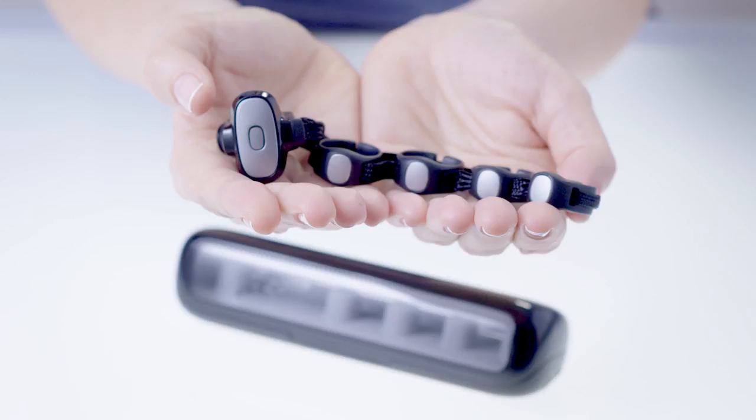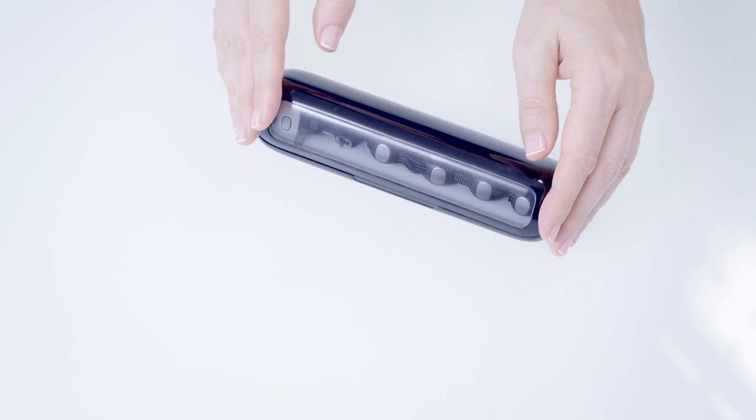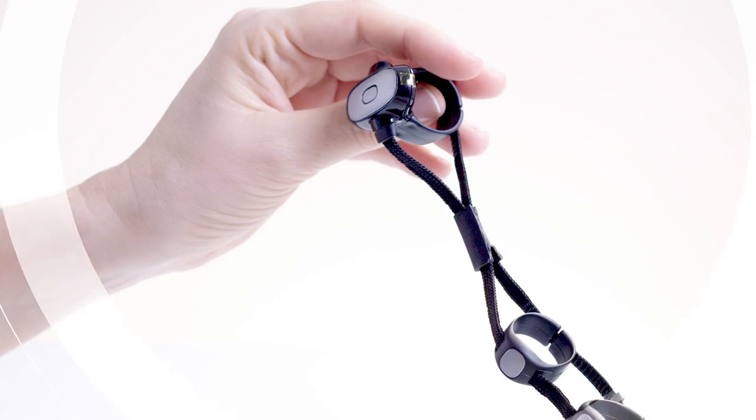To start, find the charging case and take out the tap rings from their holders. Find the ring with a large flat protrusion. This is the thumb ring.